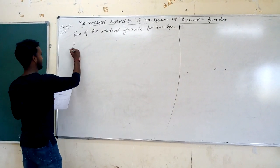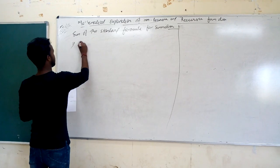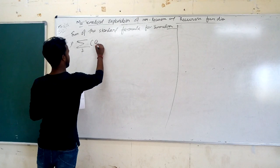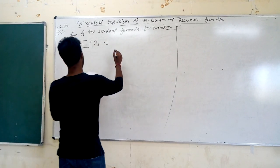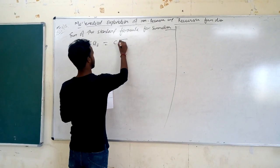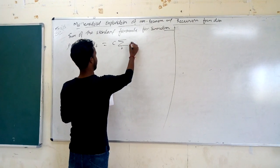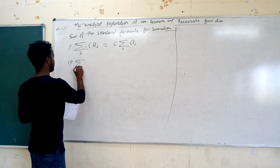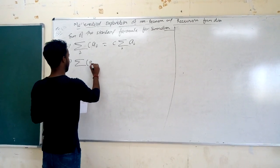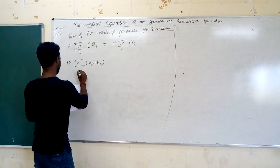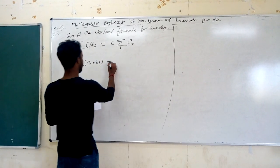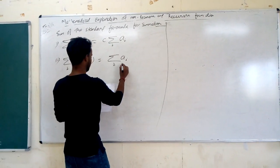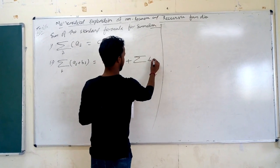The first formula is: sigma of C times A_i equals C times the summation of A_i. The second formula is: summation of (A_i plus B_i) equals the summation of A_i plus the summation of B_i.